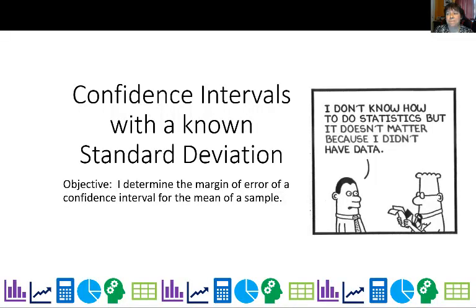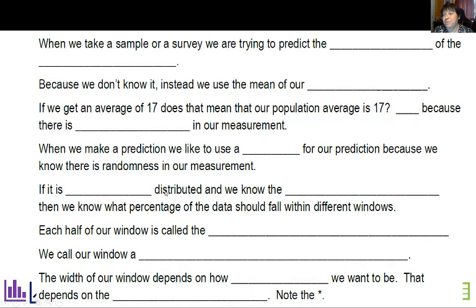We're going to take a look at something called a confidence interval and we're going to start with the ideal case where the standard deviation for the population is known. Now I kind of like this cartoon Dilbert, I don't know how to do statistics, but it doesn't matter because I didn't have data. So you actually will have little data for this to make it possible.